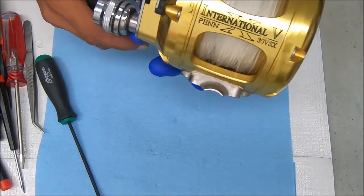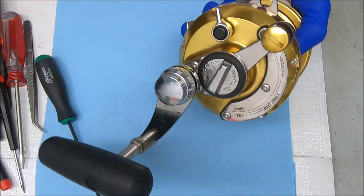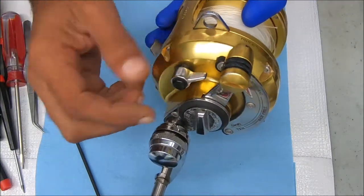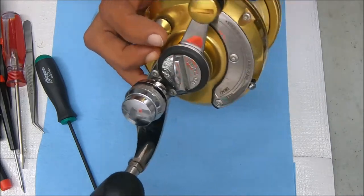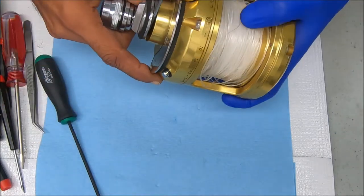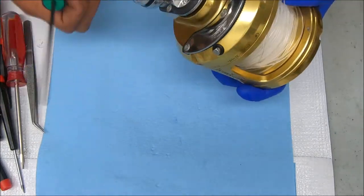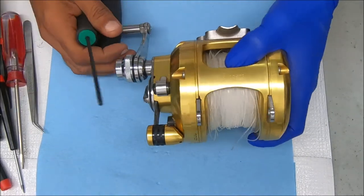Hey y'all, today we have a Penn International 30 VSX. The clicker's not working - you push it down, it works, but it's hard to do it like this. So I think it's just loose. We're going to open this up and see exactly what's wrong with it. I'm going to leave all this stuff on here and I'll service it afterwards.